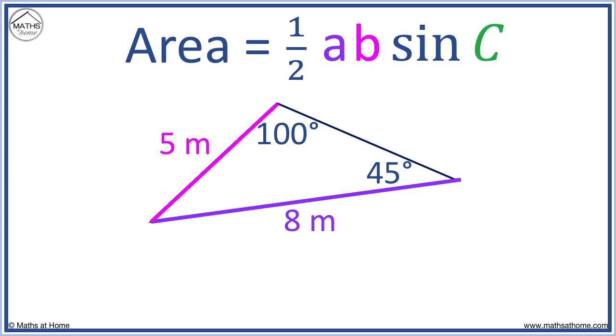We need to find the missing angle C. We have angles of 100 degrees and 45 degrees, which make 145 degrees. Angles in a triangle add to 180, so we subtract 145 from 180 degrees.